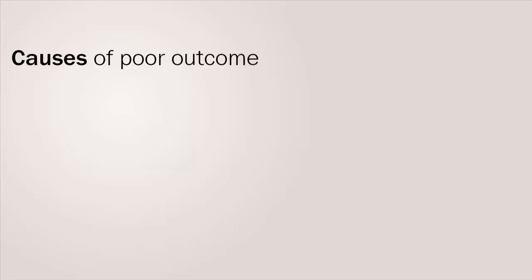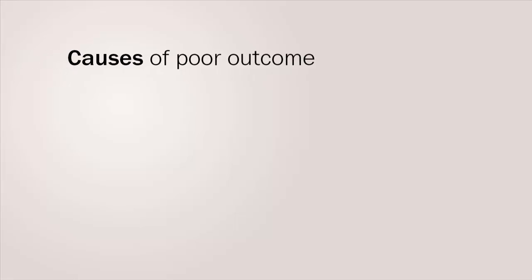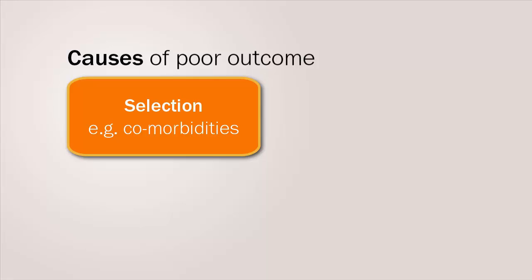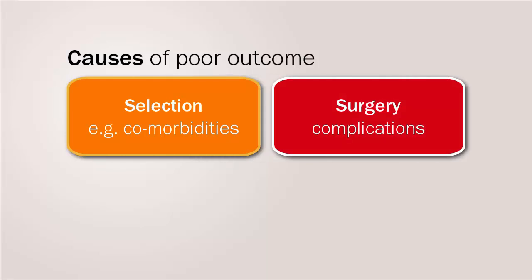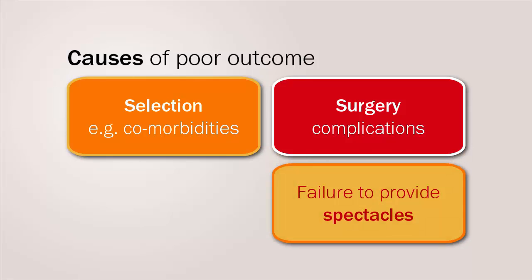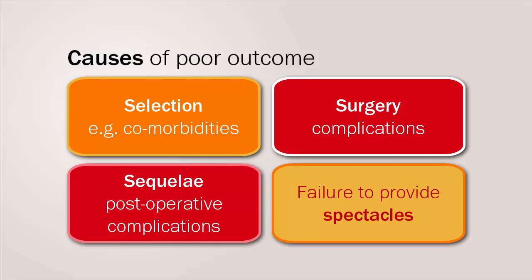There are several causes of poor outcome. Selection of patients for surgery — comorbidities, for example, can impact on final outcome. Surgical complications resulting from technique, procedure, or even lack of facilities. Failure to provide spectacles to correct postoperative refractive error can reduce benefit to the patient. And finally, sequelae, which are late postoperative complications such as posterior capsule opacification.